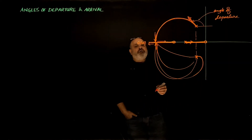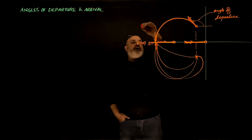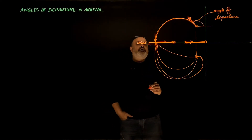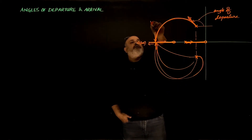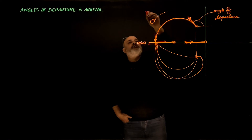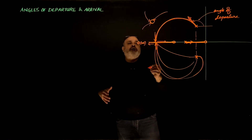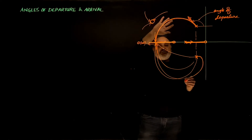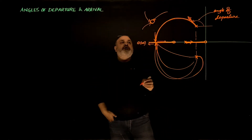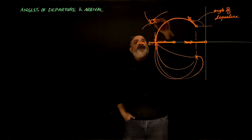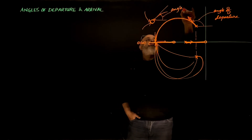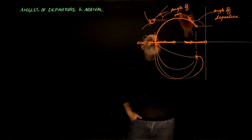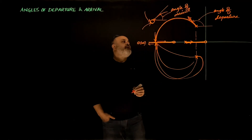Similarly, if the root locus is arriving at some zero in the complex region, we have the same issue. The root locus arrives at this zero — is it going to be arriving in this direction, or this direction, or another direction? I know that the root branch will end at the zero for some system, but how it approaches that zero — that angle is called the angle of arrival.